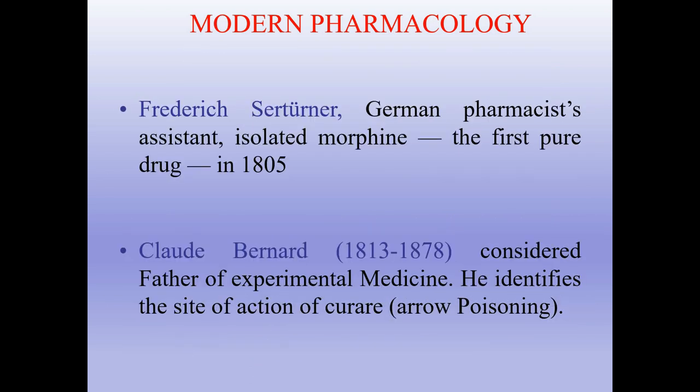Friedrich Sertürner, a German pharmacist's assistant, isolated morphine — the first pure drug — in 1805. Claude Bernard is considered the father of experimental medicine. He identified the site of action of curare, arrow poisoning. You may have seen in movies arrows blown from a small tube into a person's back or neck, causing them to fall down — this is the idea of curare, which was later identified as a skeletal muscle relaxant.